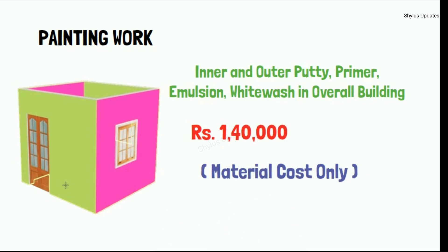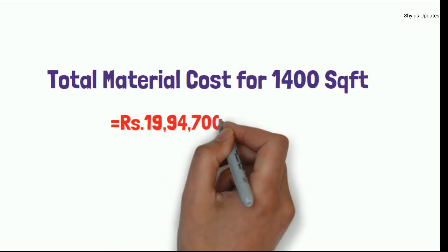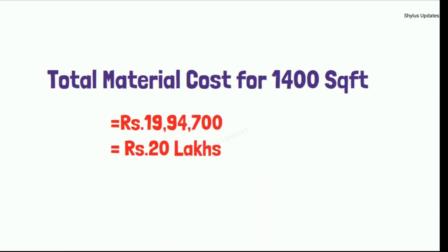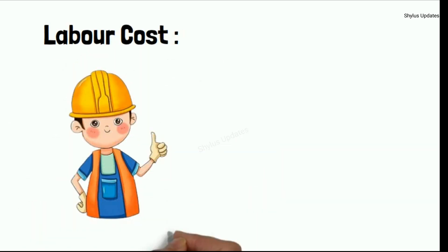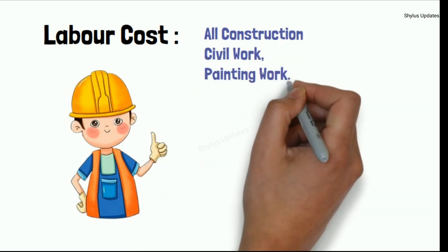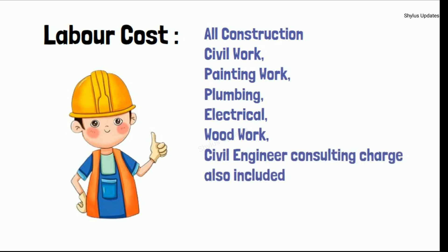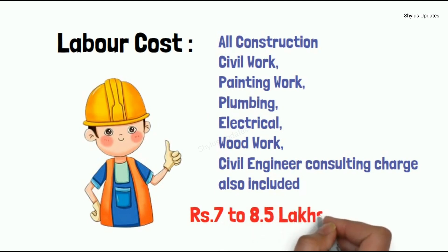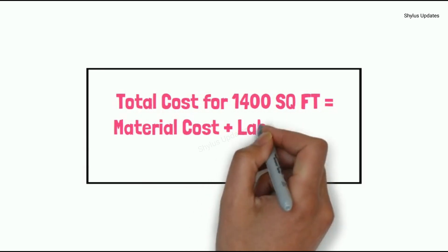The total material cost for a 1400 square feet house is Rs. 19,94,700, which is approximately equal to Rs. 20 lakhs. For labor cost, covering all civil work, painting work, plumbing work, electrical work, woodwork, and civil engineer consulting charges, the amount would be Rs. 7 to 8.5 lakhs. The total cost for a 1400 square feet house is material cost plus labor cost, giving approximately Rs. 27,94,000.